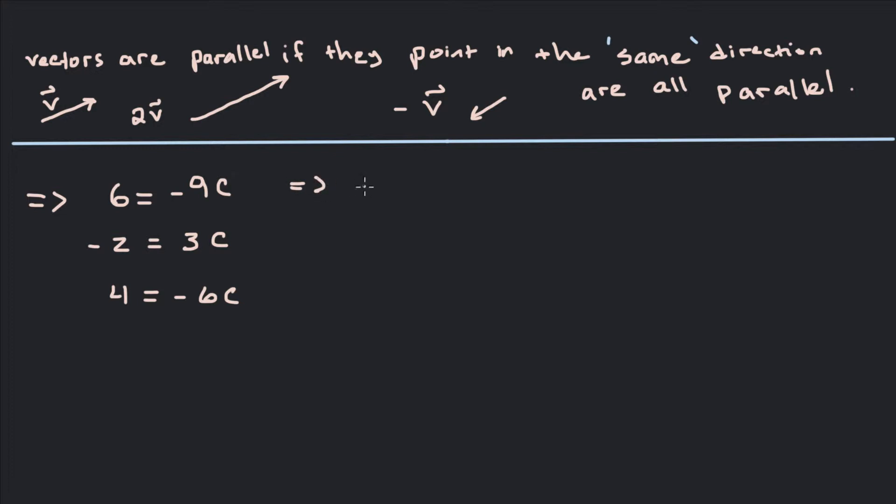We get C and the first one is negative 6 over 9. Now if we reduce that we get negative 2 over 3. In the second equation we get C is equal to negative 2 over 3 directly. In the last equation we get C is equal to negative 4 over 6 which again reduces to negative 2 over 3.